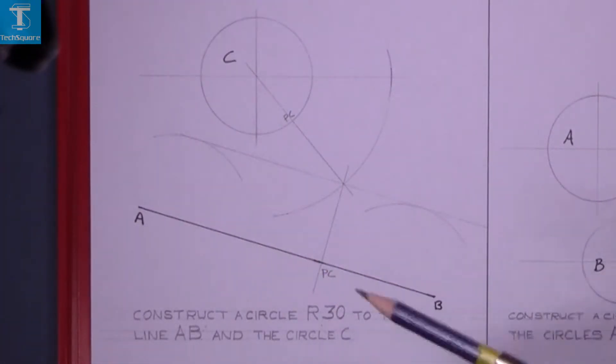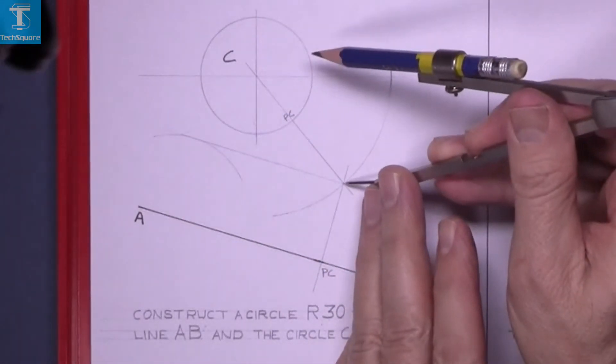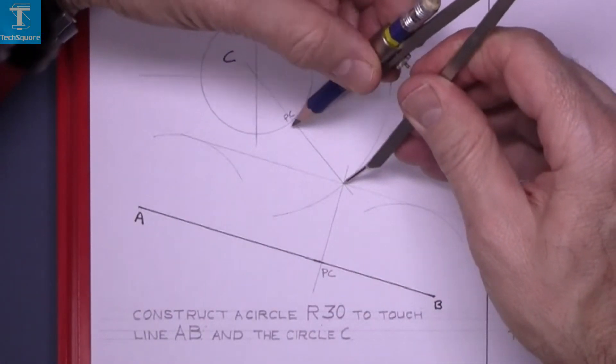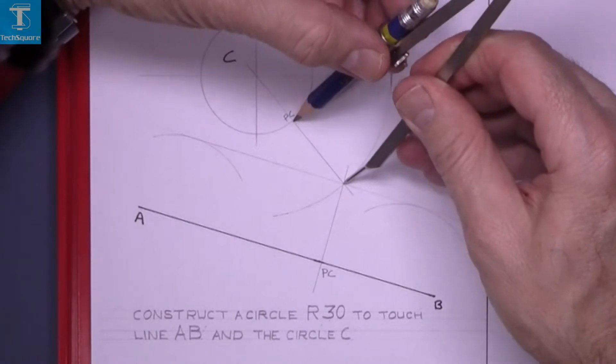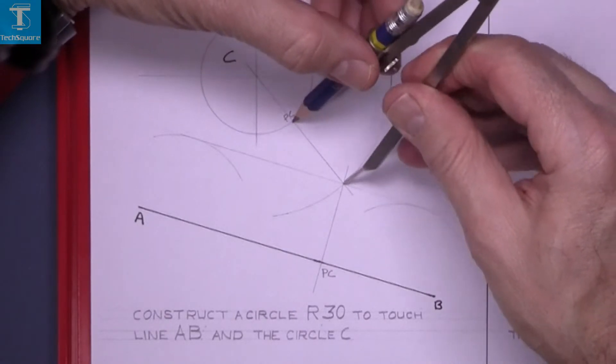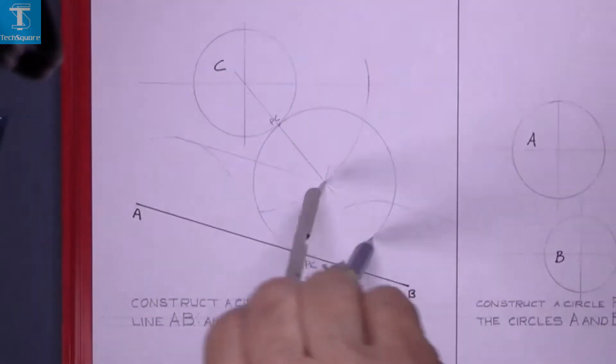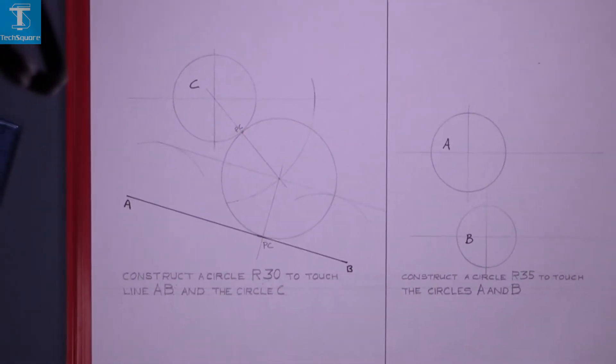Now with your compass set to the original 30 radius, we now draw the circle that we required. And that's the question complete.